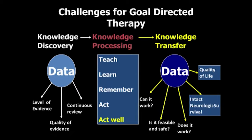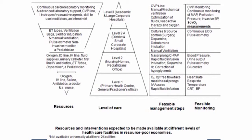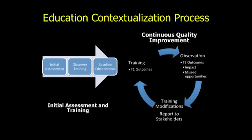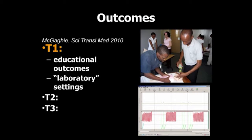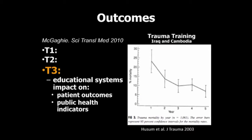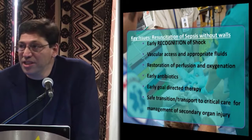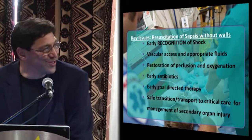We have to get better at applying the principles of goal-directed therapy where sepsis is and where the children lie. Resources compared to the level of care are inverted pyramids, so getting that match and finding where those overlaps are is where we could help. As our chain of survival moves forward, as we try to fill the gaps and save children's lives, we have to think about programs that address initial assessment and training, put them into our continuous quality improvement cycle, measure outcomes to move from educational improvements through process of care and operational performance, and start measuring improvements in patient outcomes and public health. We are poised and ready to make important changes and to start treating these key issues of resuscitation without walls. Thank you.